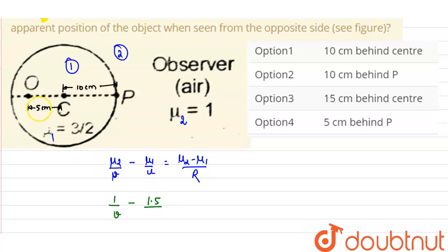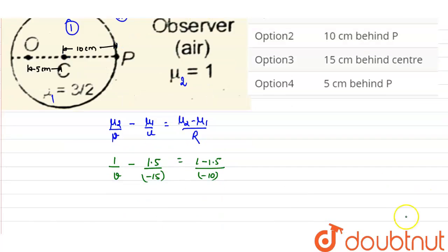from P it is at a distance of 5 plus 10, that is 15. So this will be equals to minus 15. So it will be equals to 1 minus 1.5 divided by radius of curvature is 10, so it will be minus 10.